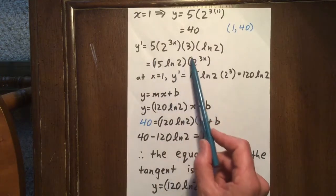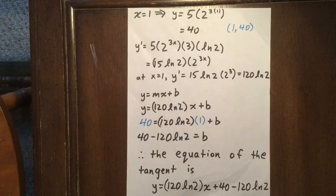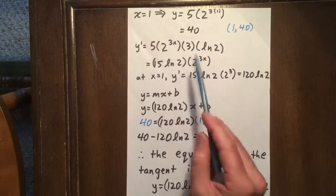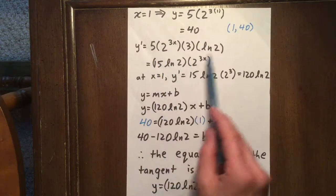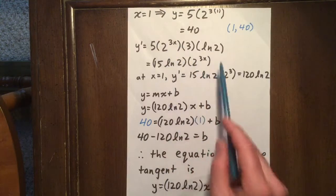So we have 5 times 2 to the 3x times 3 times the natural logarithm of the base. We can simplify this: 3 times 5 is 15, giving us 15 ln 2 times 2 to the 3x.